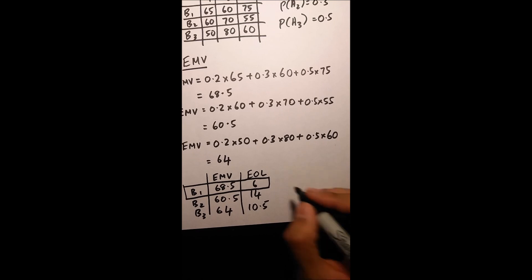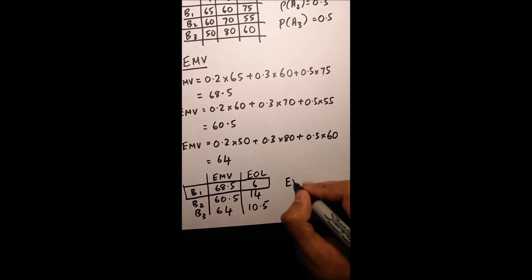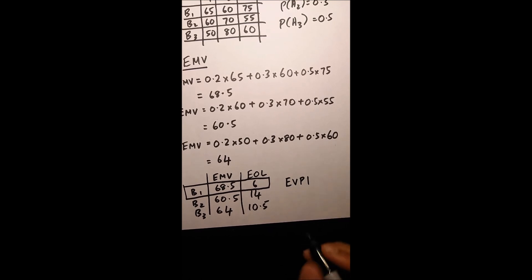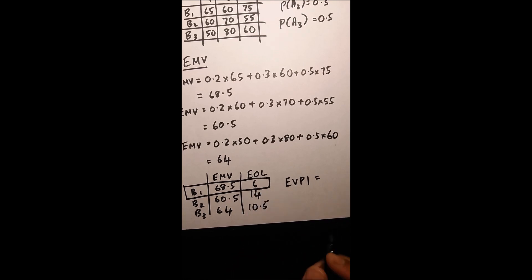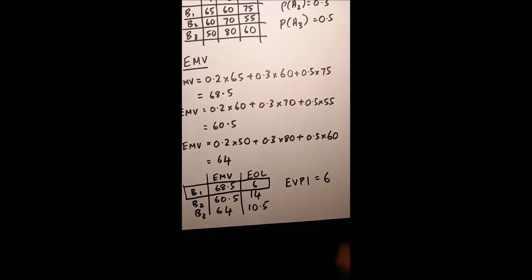And basically, the last thing that we are finding is your expected value of perfect information, EVPI. And that just equals to whatever the EOL is in the column that you've highlighted, which is 6.